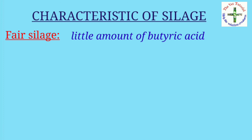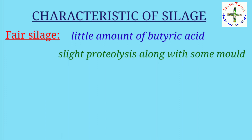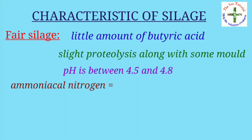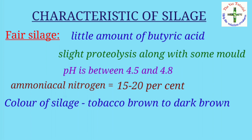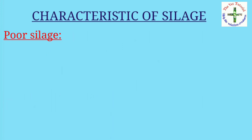Fair silage has a little amount of butyric acid, may have slight proteolysis along with some mold, pH between 4.5 to 4.8, and ammoniacal nitrogen is 15 to 20 percent of total nitrogen.